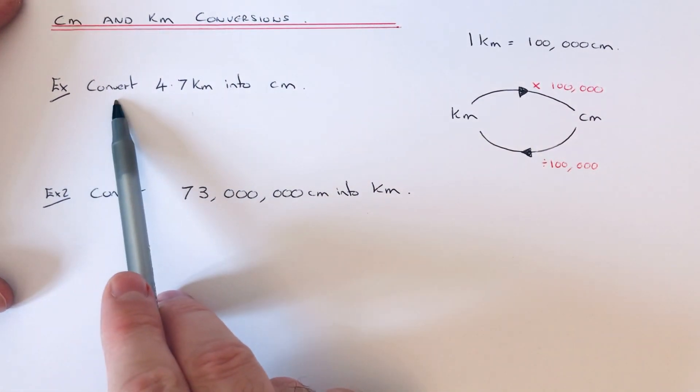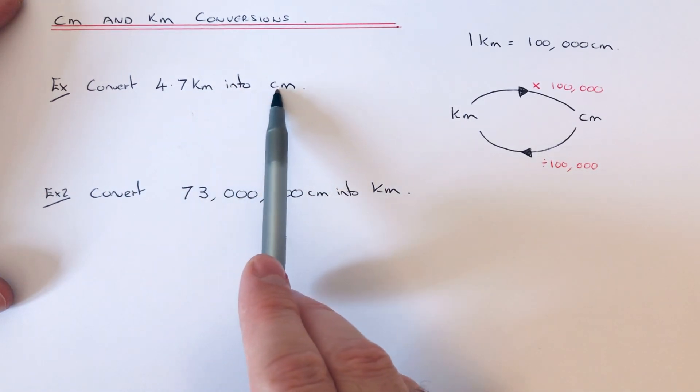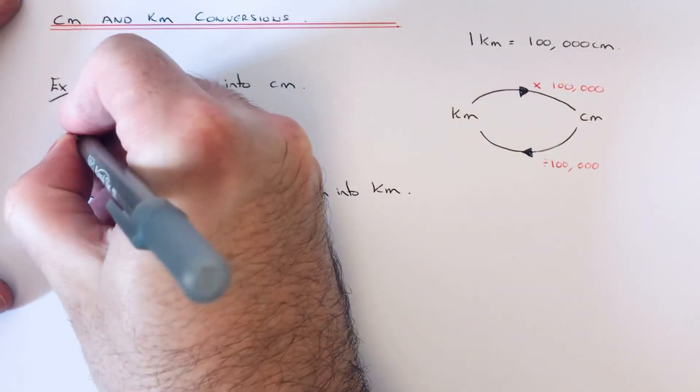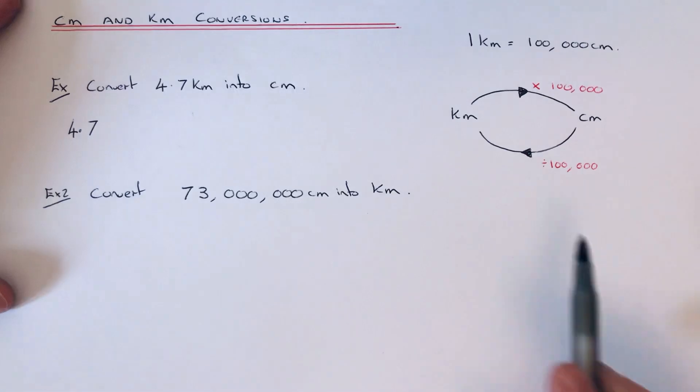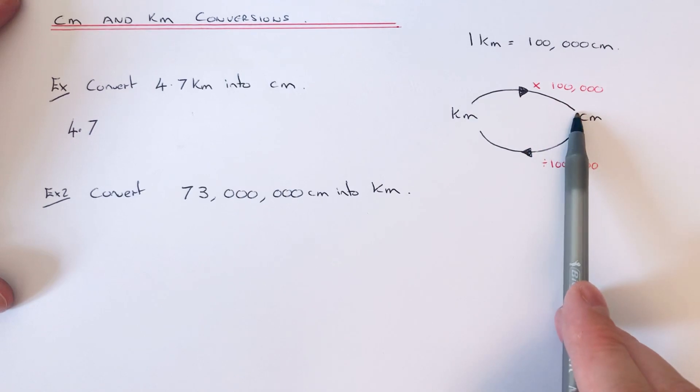Example one: we need to convert 4.7 kilometers into centimeters. So if we write 4.7 down first of all, to get from kilometers into centimeters, we need to multiply it by 100,000.